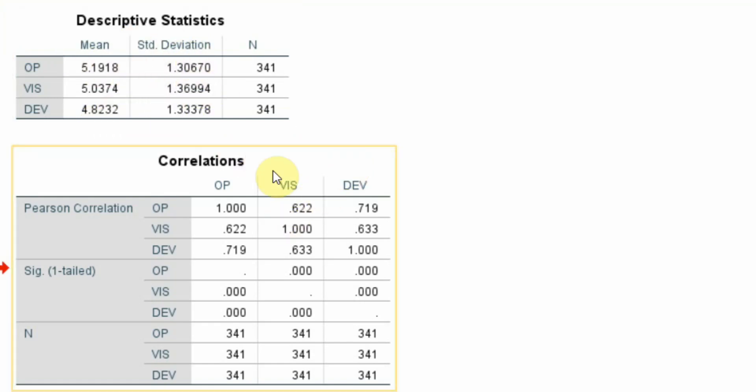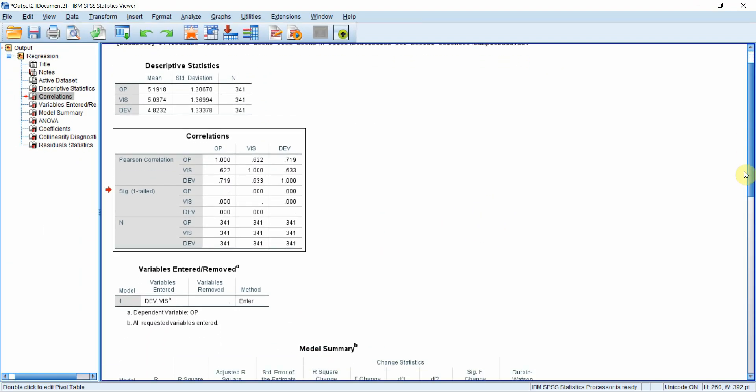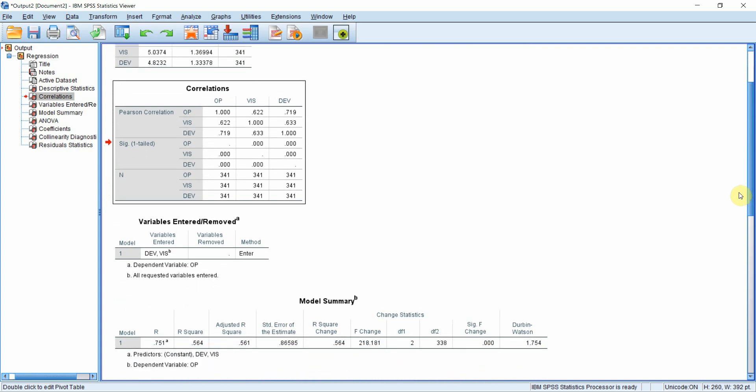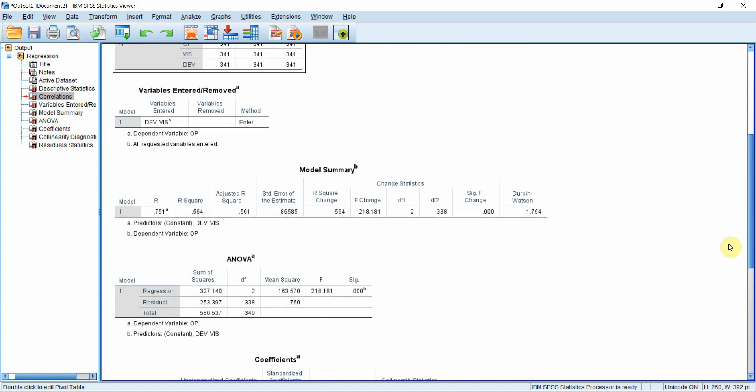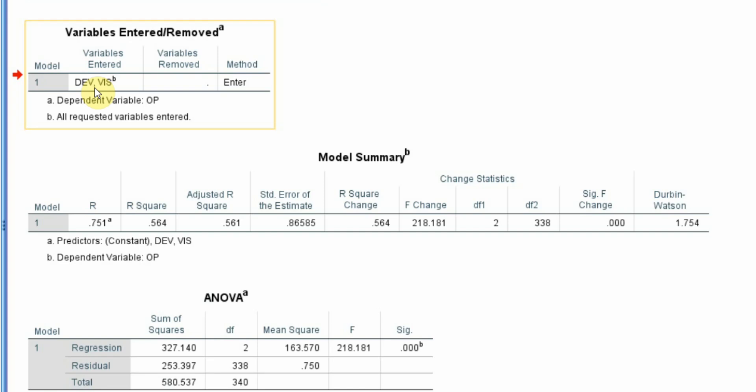Here is your correlation between different variables - we have already discussed the correlation table previously. The video will be shared in the description. Just double check the variables entered and removed. Yes your dependent variable is OP. Yes your predictors are development and vision.